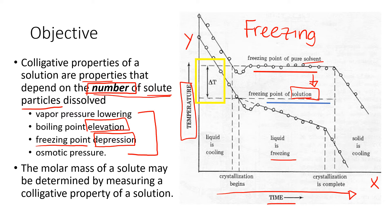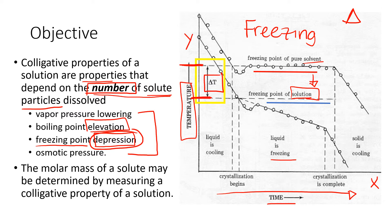The freezing point of the pure solvent is higher, and for the solution it is lower. There is a difference between them, and that difference is called delta — the triangle symbol in Greek meaning change or difference. That's what depression means here: your solution's freezing point is always going to be lower than the pure solvent's.